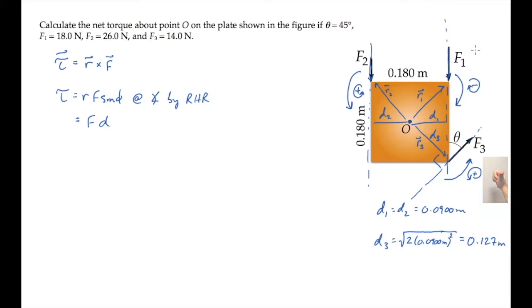You can also find the direction of the torque by finding the direction of the R cross F vector. For force F1, R1 is this way, force F1 is down. So putting the fingers of the right hand along R1, curling them towards F1, the thumb points into the screen in the negative direction.